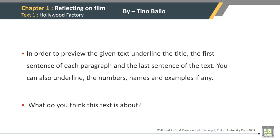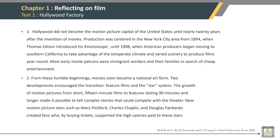Hollywood Factory, by Tino Bello. In order to preview the given text, underline the title, the fourth sentence of each paragraph, and the last sentence of the text. You can also underline numbers, names, and examples if any. What do you think this text is about? First sentence of paragraph 1: Hollywood did not become the motion picture capital of the United States until nearly 20 years after the invention of movies.